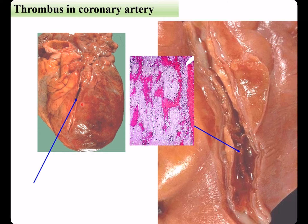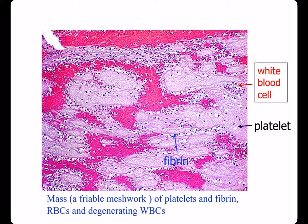Initial thrombus in coronary artery. Under microscope, it is a mixed thrombus containing platelets and fibrin, erythrocytes, and degenerating leukocytes, forming a gray-white friable meshwork.